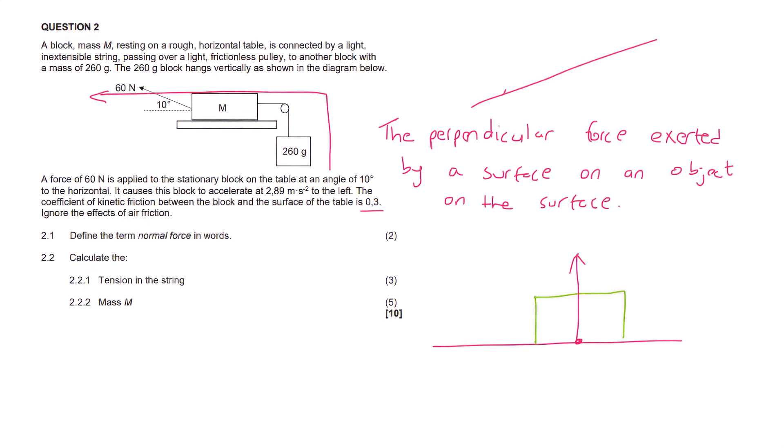And even if you are on a slope, the normal force is always going to be by the surface, and it's perpendicular to the object that is on the surface. And perpendicular, we know, means 90 degrees. Okay, question 2.2.1. Calculate the tension in the string.